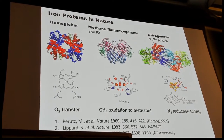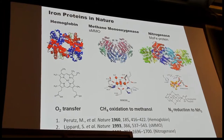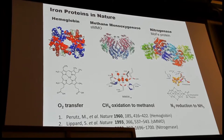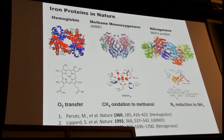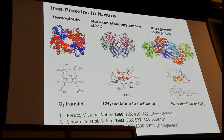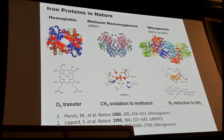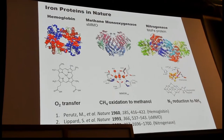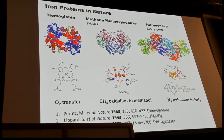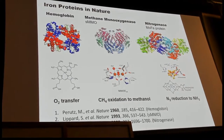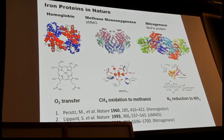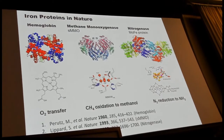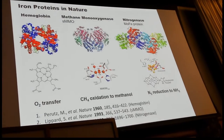Let's first talk about something big. Iron is popular to use as a metal in nature. In your blood, it's used as an oxygen transfer metal. Or it can be used as an active site for challenging reactions such as methane oxidation or nitrogen reduction. Nature does not only use a single iron as an active site — it depends on how many electrons are involved in the reaction.